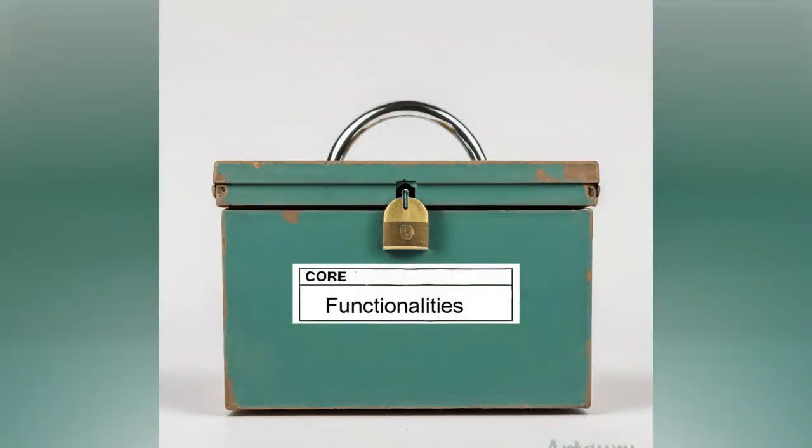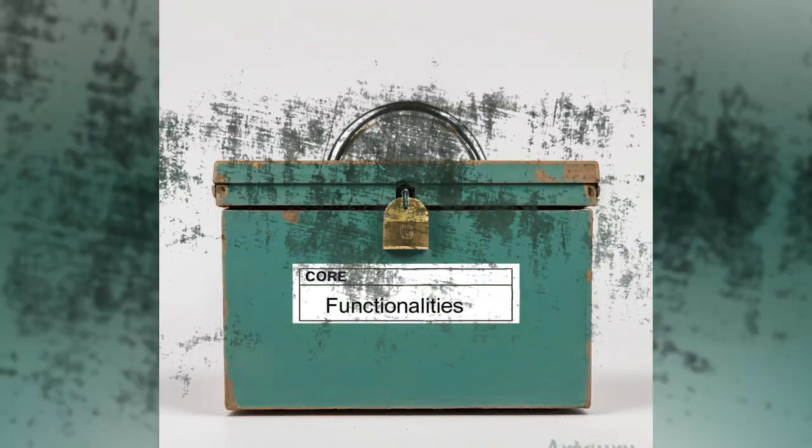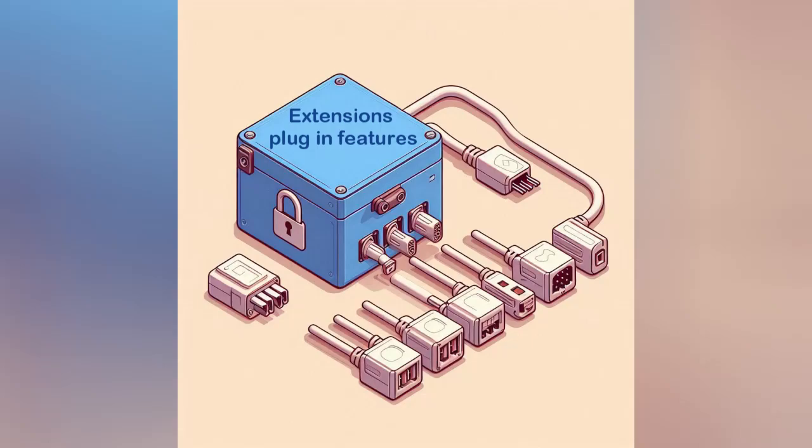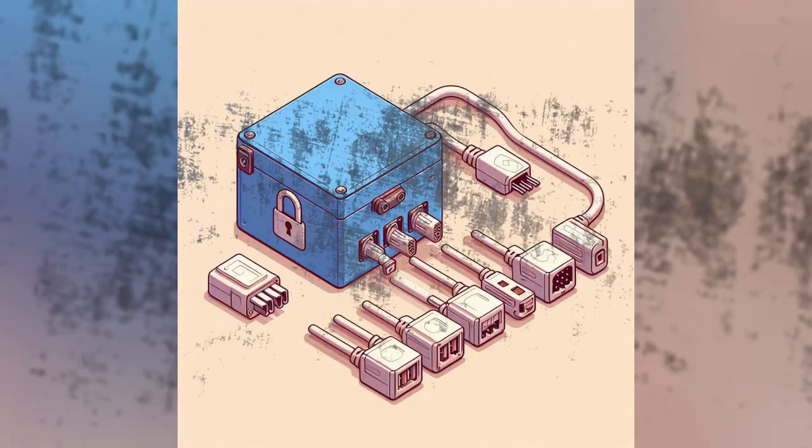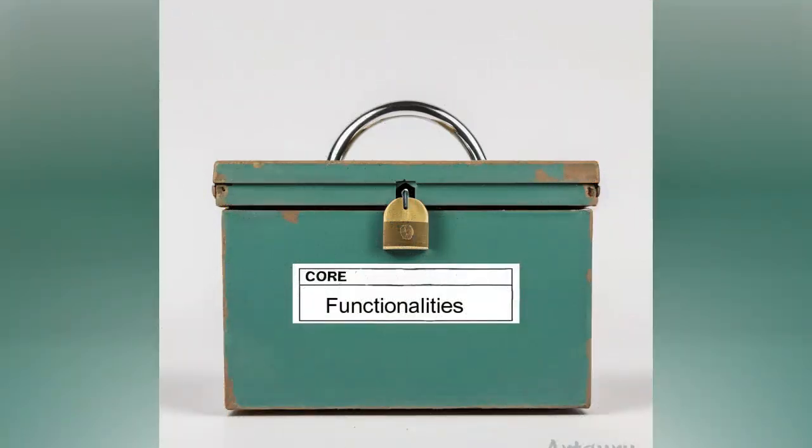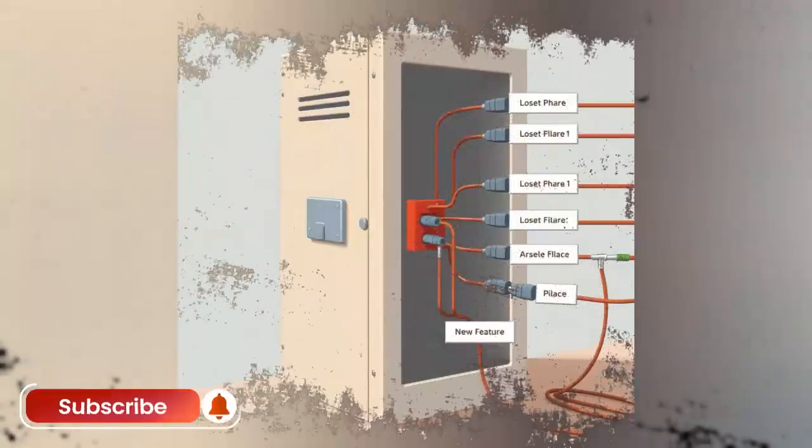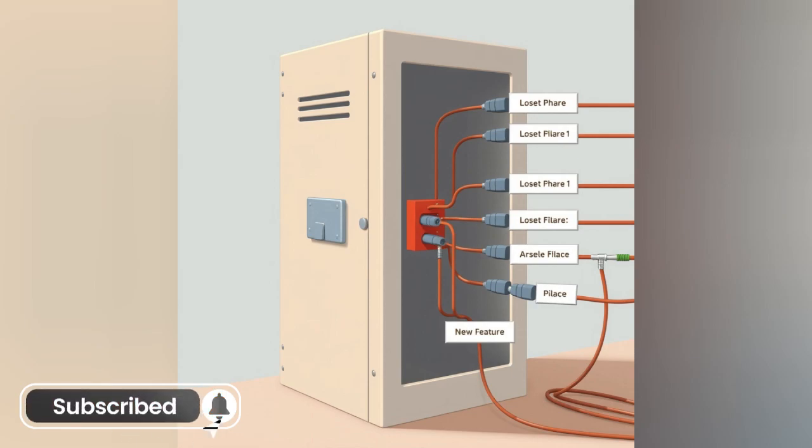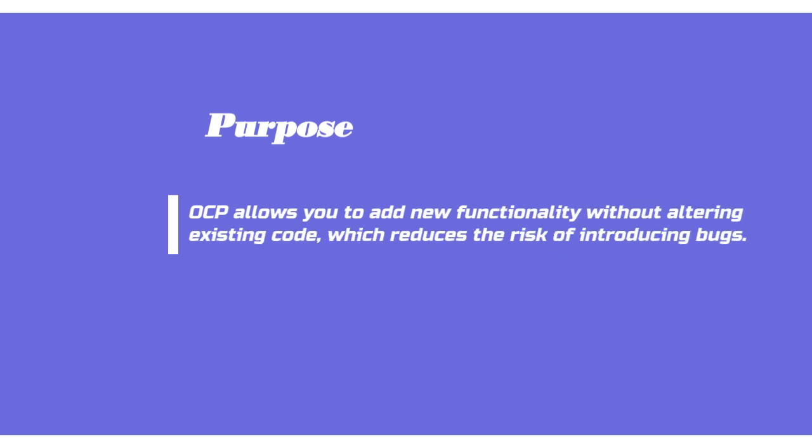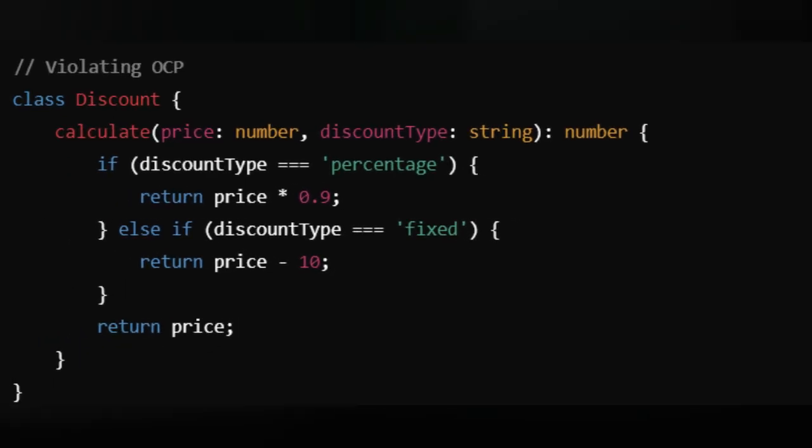A box you cannot change or modify, but there are plug-in ports or open connectors. These connectors allow additional components to be added, but the locked box remains unchanged. Various new modules or features being plugged into these connectors, showing how the core functionality stays intact while the software grows by adding new components. OCP allows you to add new functionality without altering existing code, which reduces the risk of introducing bugs.